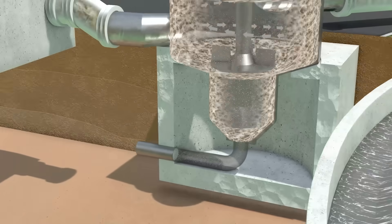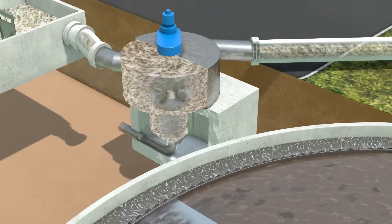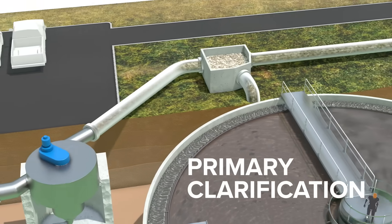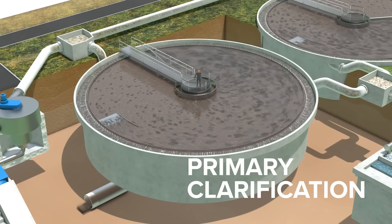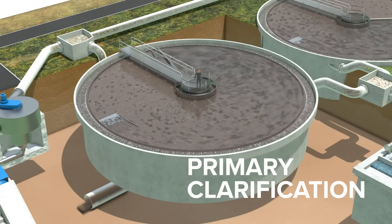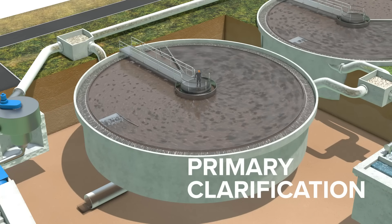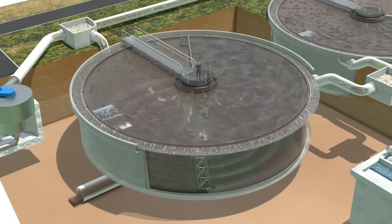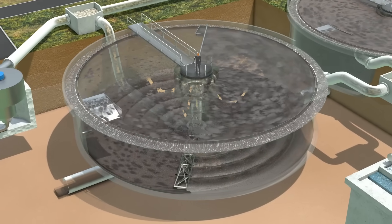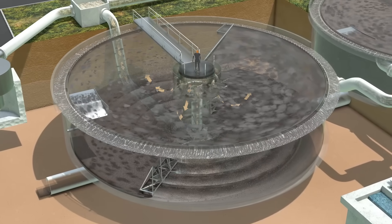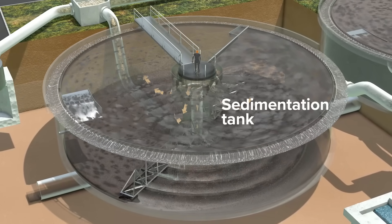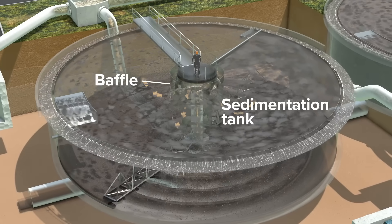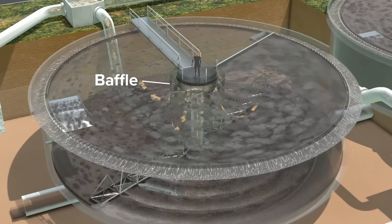The wastewater leaves the headworks towards primary clarification. Primary clarification separates organic matter from the wastewater. Water flows in at the center of large circular basins called sedimentation tanks. A baffle slows down the flow rate to aid the settling process.